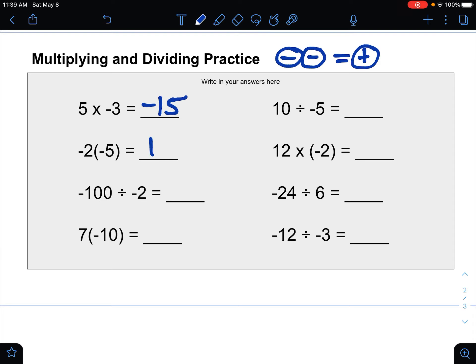So for the next one here, this means multiplying, so 2 times 5 would be 10, and then there's two negatives, so those make a positive.